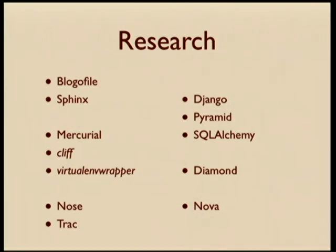Nose and Trac are common developer tools that both use plugins, though it's more likely you've used them than written an extension for them. Django, Pyramid, and SQLAlchemy are developer libraries that use plugins or at least load code dynamically at runtime. Diamond is a monitoring app with an extensive set of plugins that does some things similar to what Ceilometer does, but from a different perspective — we wanted to look at their architecture but couldn't really use what they had. Nova is the primary component for OpenStack and relies on a large number of drivers for managing all the different aspects of a configurable OpenStack deployment.